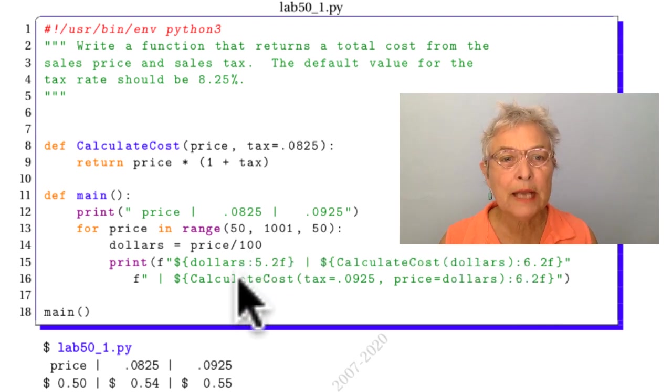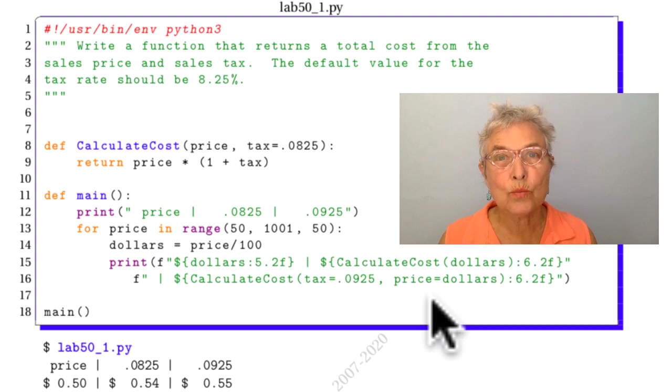And we do it again, where this time we're going to use 0.0925, but we're using the keyworded argument so that these things are out of place. And again we do that at 6.2. Okay, that's that one.